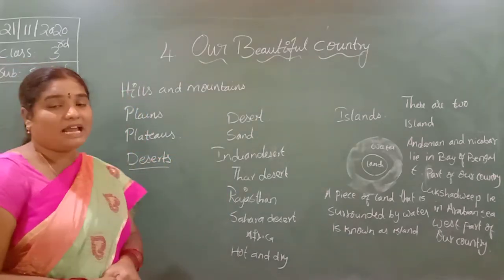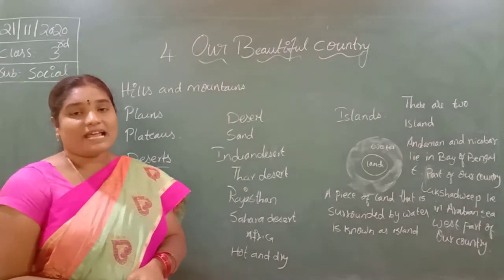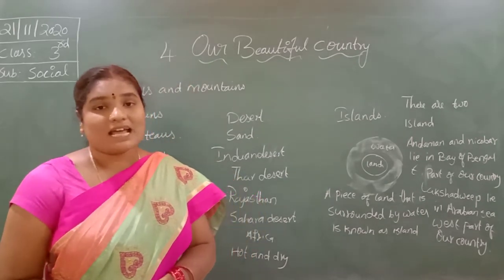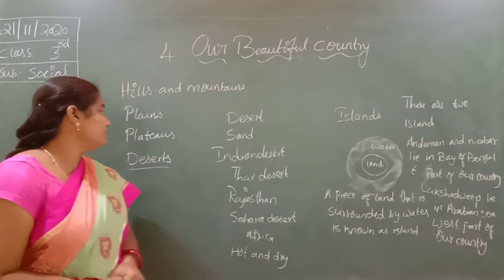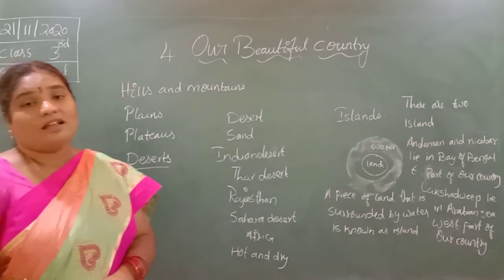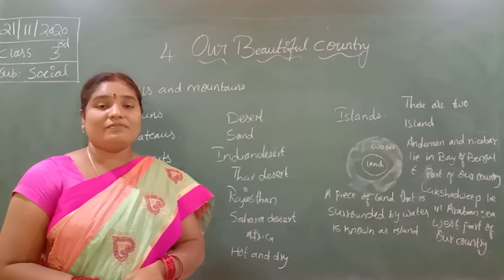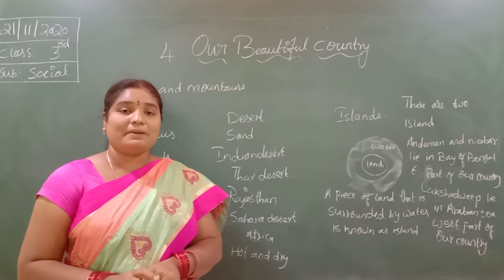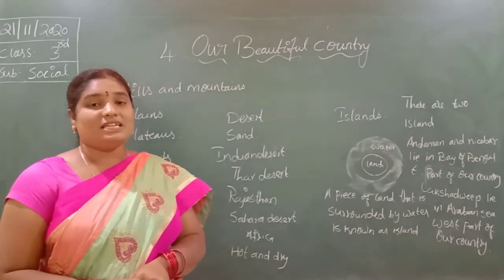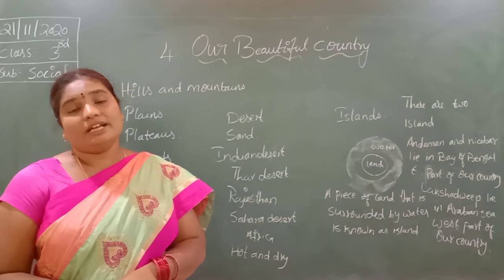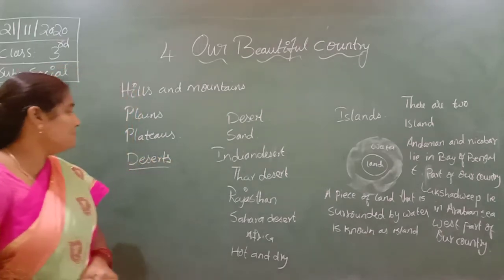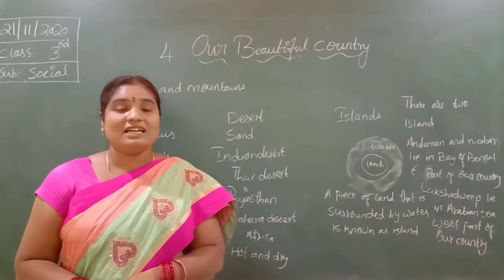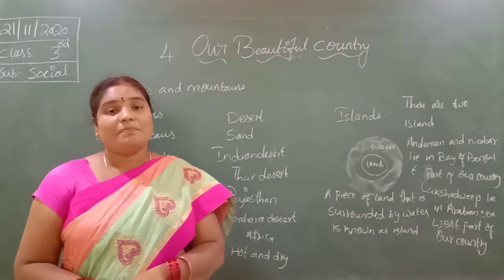Plains: the low level lands are known as plains. There are two plains in our country — the northern plains and the coastal plains. The northern plains get river water from the Himalayas. The coastal plains are land areas surrounded by seas and oceans. Next, plateaus: the high level land is known as a plateau. The soil is not so fertile as plains.